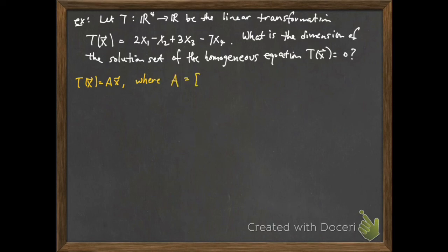Well, T(x) is Ax where A is this matrix [2 -1 3 -7]. So A is just the standard matrix for this linear transformation. I can see the pivot there, and so I see that the rank of the matrix is 1.